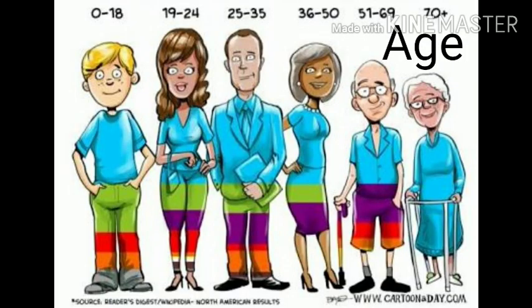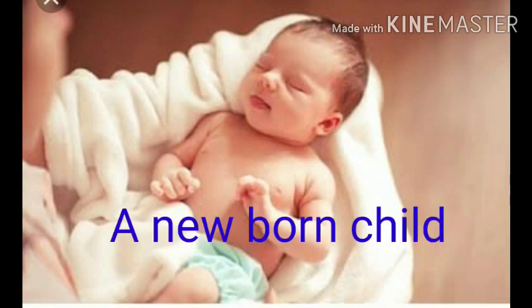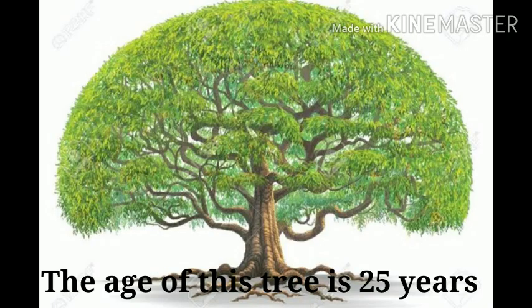Following with age. A newborn child. Newborn is an adjective. The age of this tree is 25 years. So 25 years is the age.